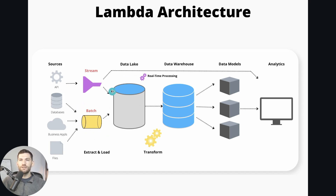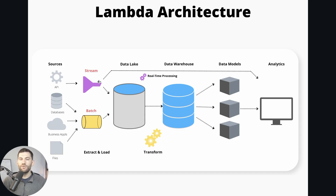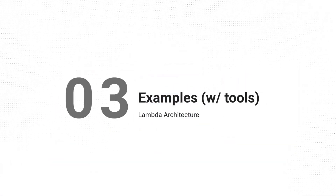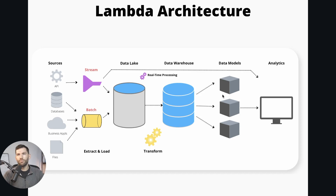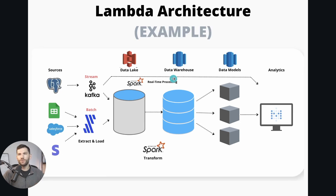Those are the types of decisions teams need to make when deciding if this architecture makes sense. If you can get it right, it's a nice option. I typically recommend starting with the batch modern warehouse approach and then moving to data streaming only if you feel it's absolutely necessary and your team understands the potential costs and maintenance requirements. Similar to what we did previously with the modern data warehouse, I'm going to show you a few example designs of this Lambda architecture with some tools you might be familiar with — not to recommend any particular tools, but to put it in perspective.